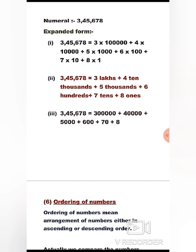In the third way, we write the expanded form by writing the place value of all digits in numeral form. So 3,45,678 is equal to 3,00,000 + 40,000 + 5,000 + 600 + 70 + 8. In these three ways we can write the expanded form.